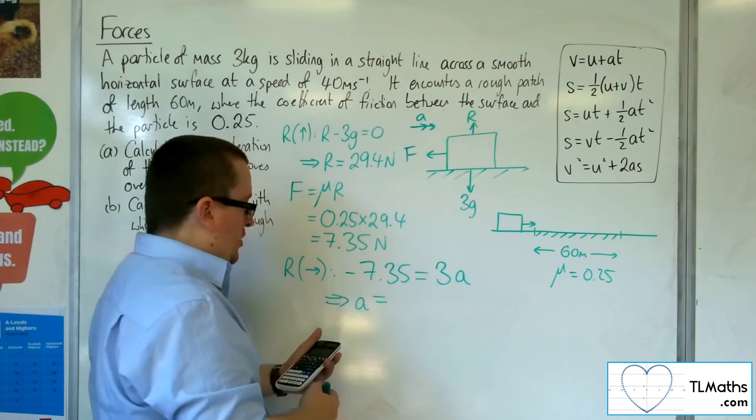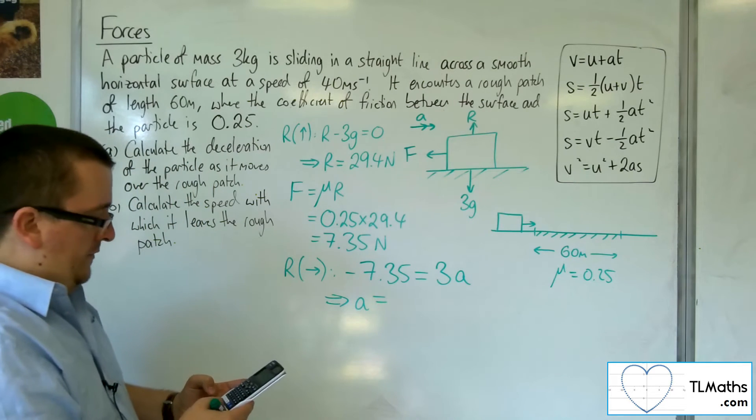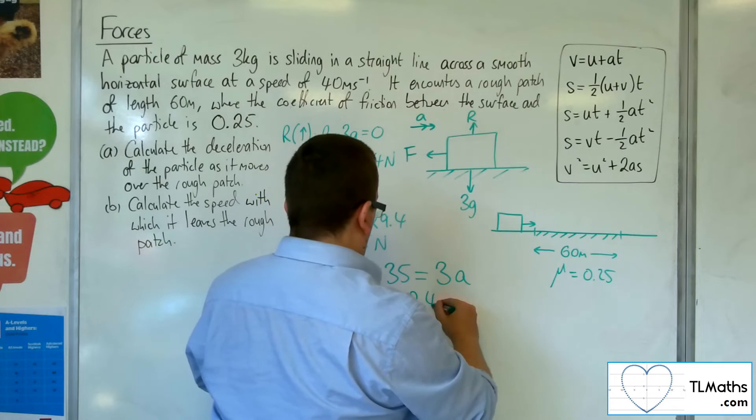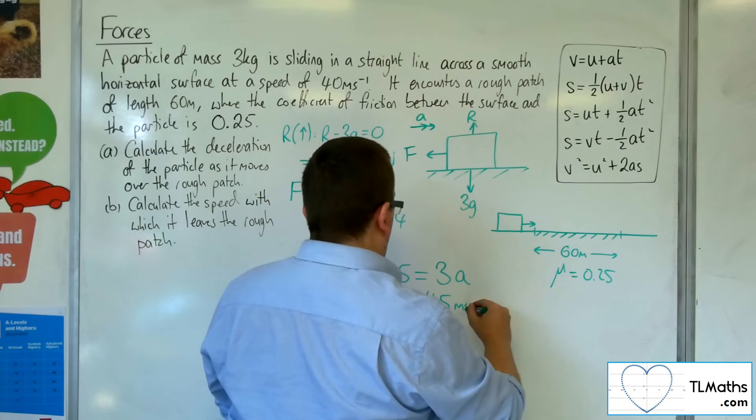So the acceleration is minus 7.35 divided by 3, which is minus 2.45 metres per second per second.